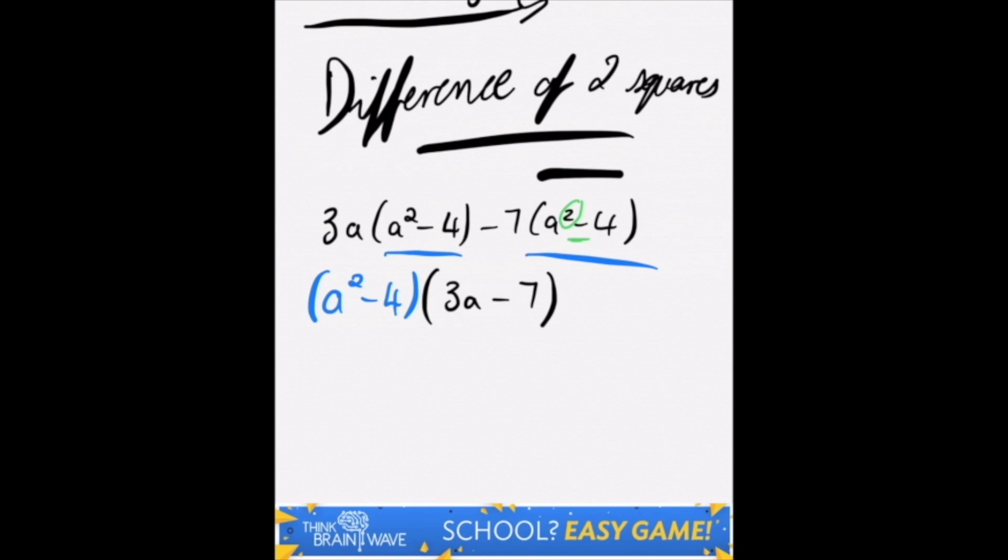We pull out the a squared minus 4, and then what we're left with is the 3a in front of the a squared minus 4 on the left, and the minus 7 which is in front of the a squared minus 4 on the right. You then need to break the a squared minus 4 into the difference of squares, which is a minus 2, a plus 2.